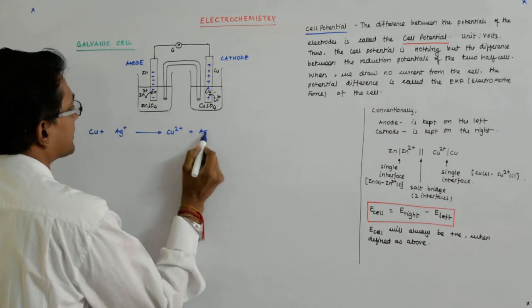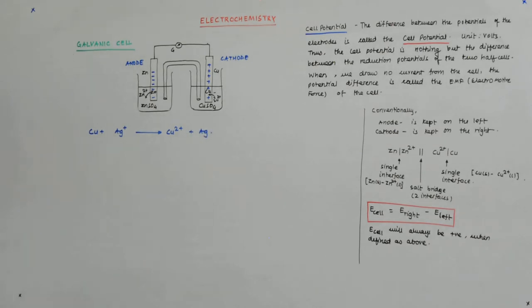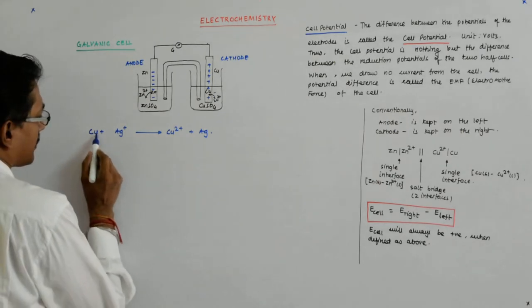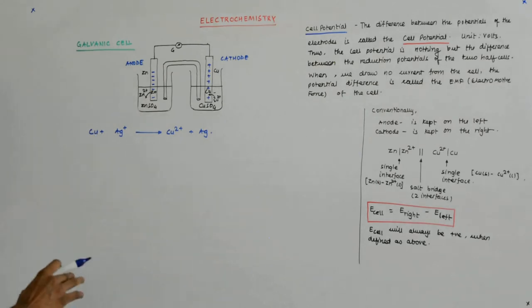What is happening here? Here copper is getting oxidized, right? Copper is getting oxidized while silver is getting reduced.